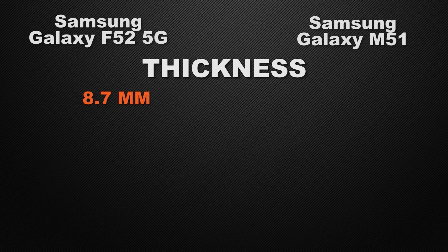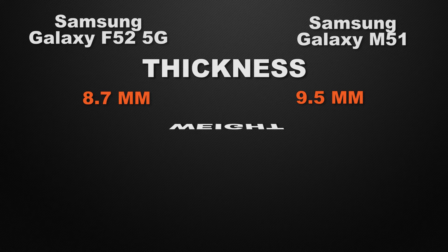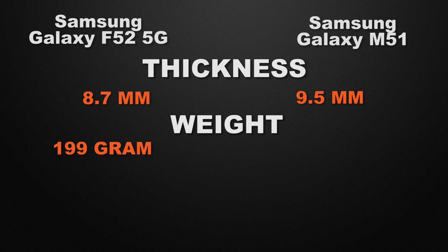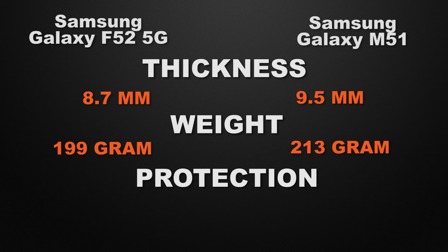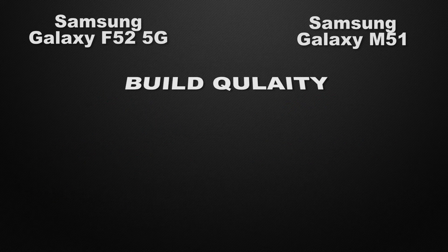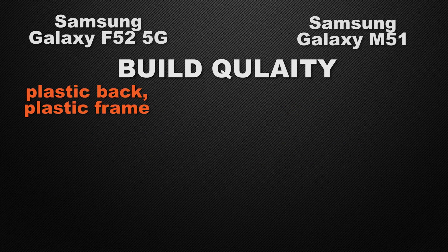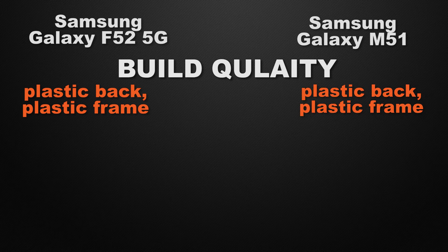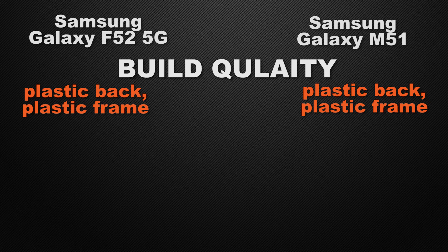Moving to body features: the F52 is 8.7mm thick versus 9.5mm for M51, so F52 wins for slimmer body. The F52 weighs 199 grams compared to M51's 213 grams, so F52 wins for lighter weight. The F52 has Gorilla Glass 3 while the M51 has Gorilla Glass 3+, so M51 wins for better protective glass. Both devices have a plastic back with a plastic frame.